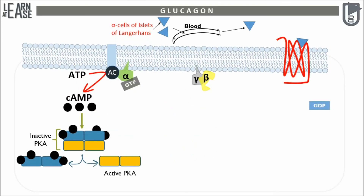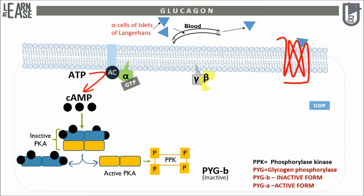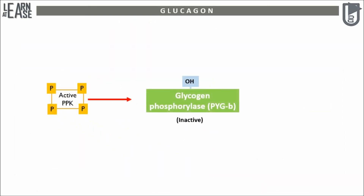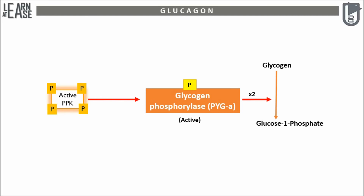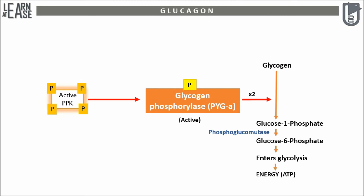In the cytoplasm there exists another inactive enzyme named phosphorylase kinase, abbreviated as PPK. Activated protein kinase A will phosphorylate PPK and activate it. This will further phosphorylate an enzyme called glycogen phosphorylase. Inactive glycogen phosphorylase has a serine amino acid residue at the 15th position, which is phosphorylated by active PPK, activating glycogen phosphorylase. Two glycogen phosphorylase molecules form a dimer that catabolizes glycogen to release glucose-1-phosphate. An enzyme phosphoglucomutase converts glucose-1-phosphate to glucose-6-phosphate, which then enters the glycolytic pathway to yield energy.